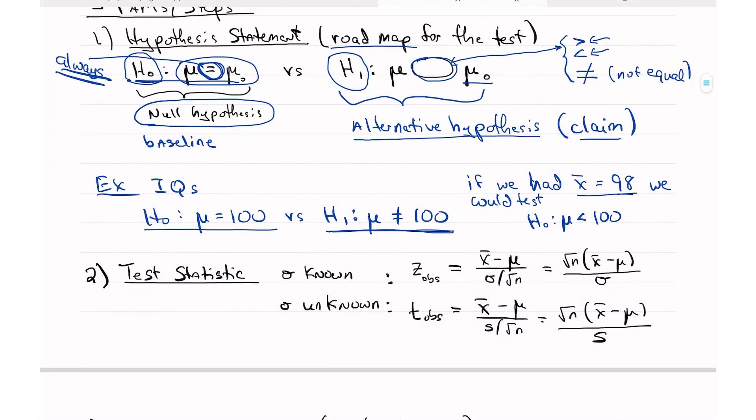So the second part of this, the second step, is we need a test statistic. And in this chapter, just like in chapter eight, we have two different test statistics. And we have one when sigma is known and we have another when sigma is not known or unknown. When sigma is known, we use z, the standard normal. Now, your book doesn't call this, it doesn't have this little subscript observed. And I find that it's confusing to students if we leave that out. So I'm going to put z observed. And this is the value we calculate from our sample.